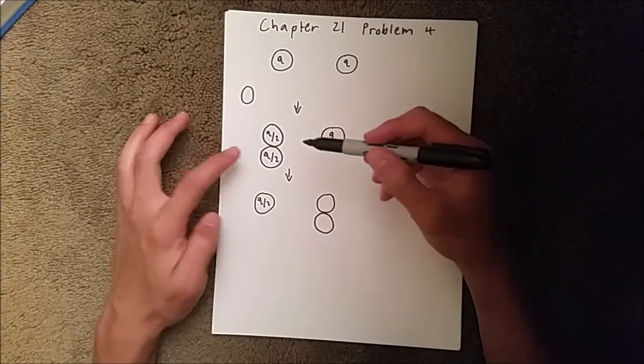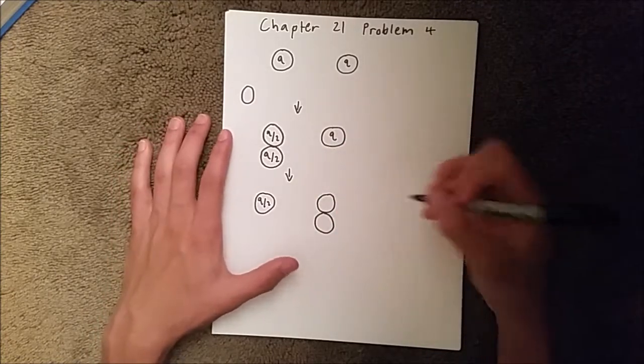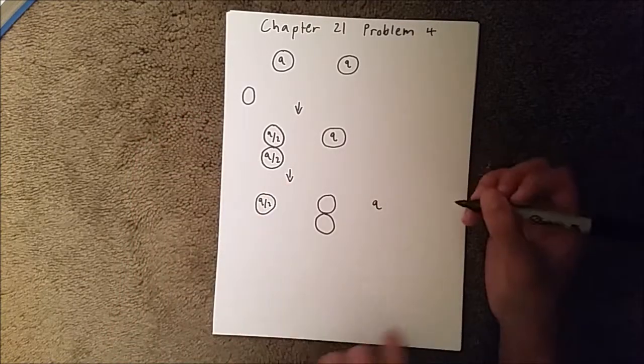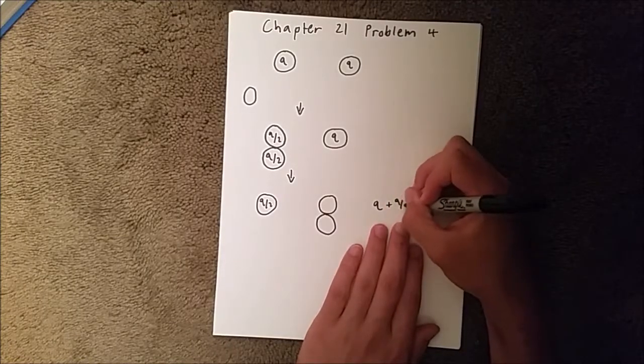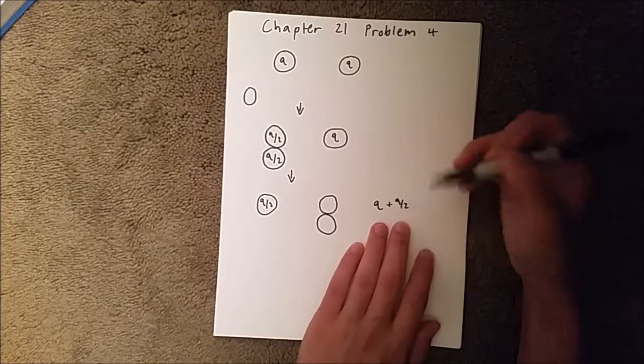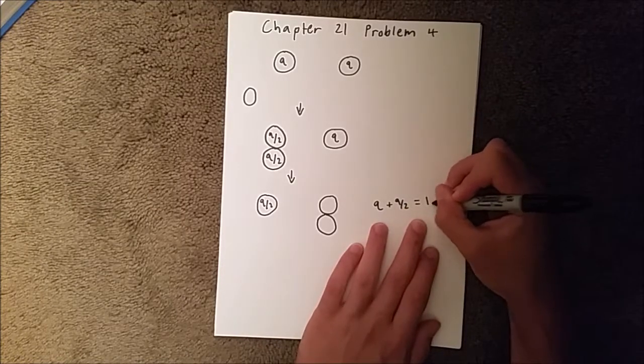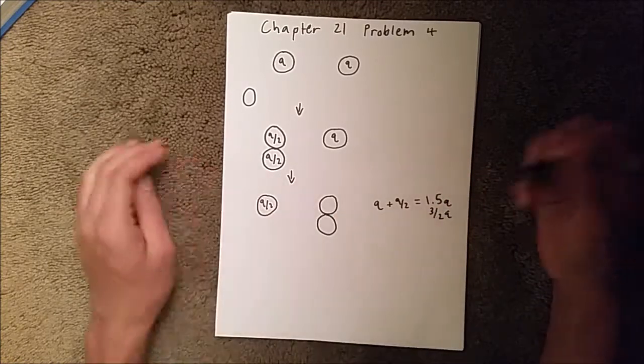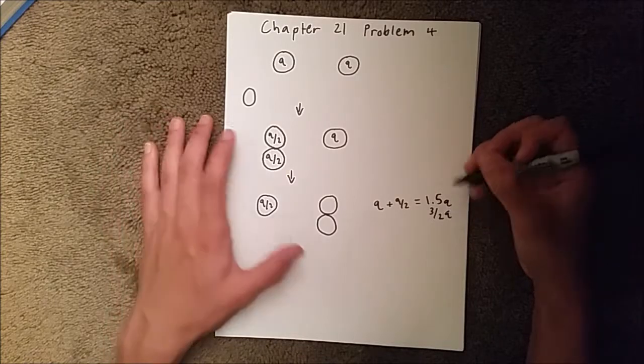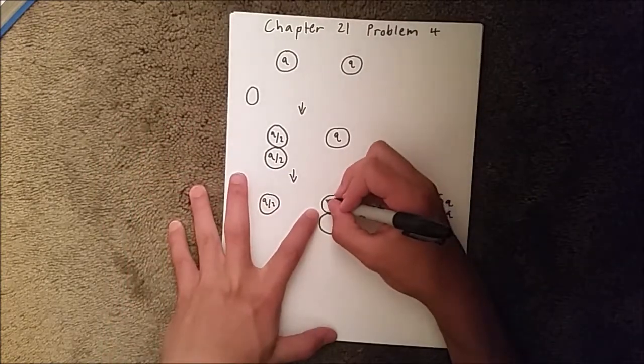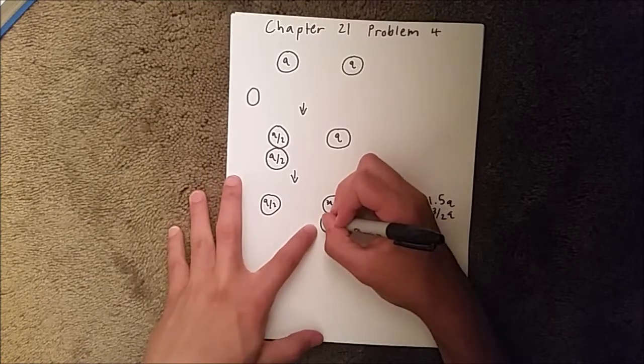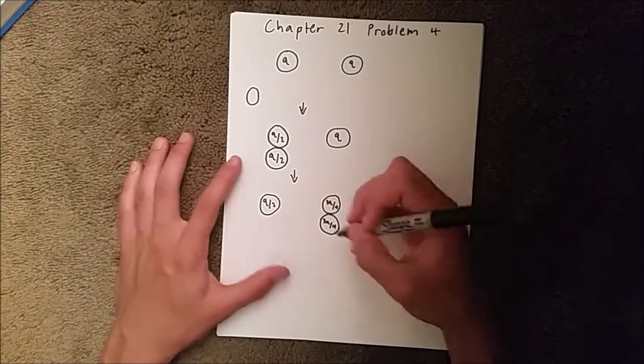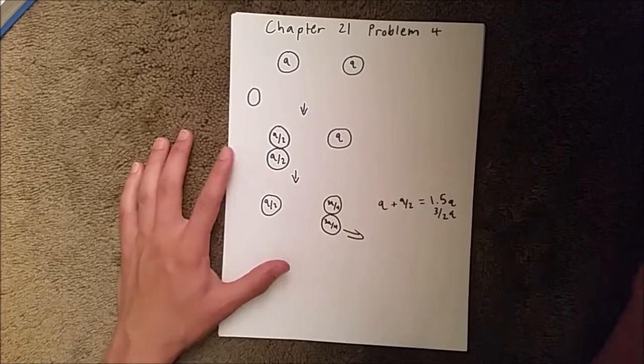We're going to have these two touching each other and we need to split this total charge. This one's a little more confusing. We have Q plus Q over 2 as our total charge, which equals 1.5Q or 3Q over 2. Half of that is 3Q over 4, so we have 3Q over 4 and 3Q over 4.